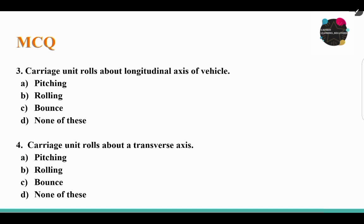Next question: the carriage unit rolls about the longitudinal axis of the vehicle — what type of vibration is this? Option A: pitching, Option B: rolling, Option C: bounce. The answer is Option B, rolling. If the unit rolls about the transverse axis, that is pitching.